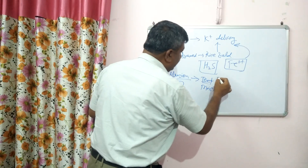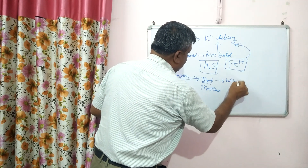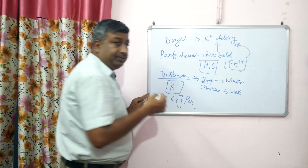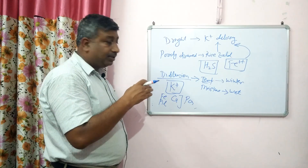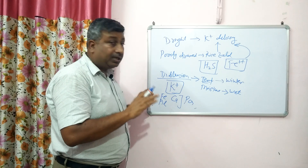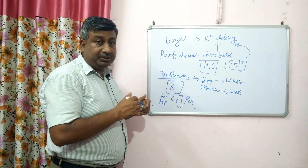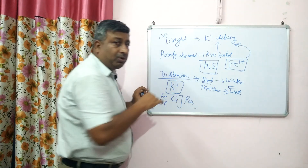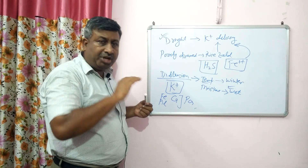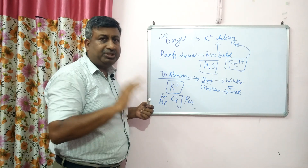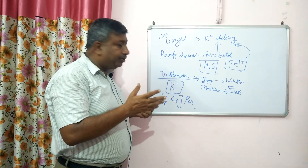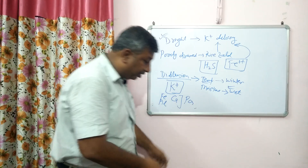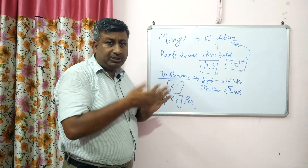In winter season, if the soil is too wet with anaerobic conditions, or conversely too dry, both conditions can cause potassium deficiency. Whether the soil is too wet or too dry, these extremes also contribute to potassium deficiency.